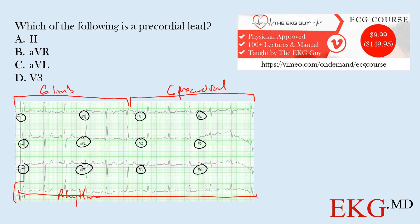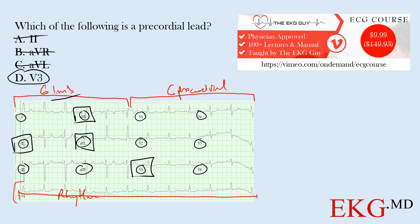Looking at our answer choices: lead two is a limb lead, so that's not the answer. Lead AVR is another limb lead, so that's not the answer. Lead AVL is also a limb lead, so that's not the answer. We're left with V3, which is one of our six precordial leads. So the answer is D, lead V3. Good job if you were able to get that right.